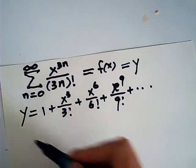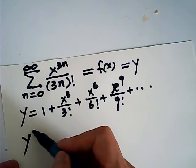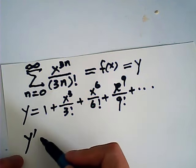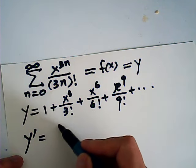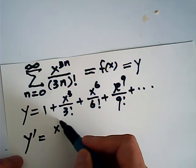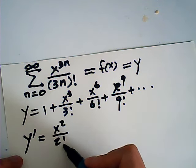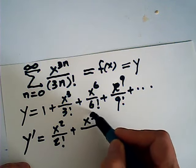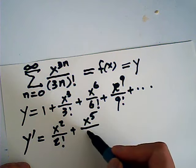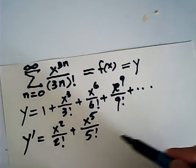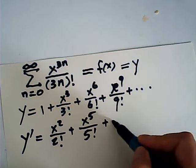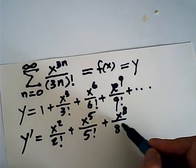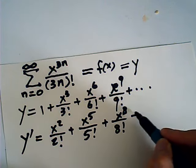Now if we take the derivative of y with respect to x, that will be equal to x squared over 2 factorial, plus x to the fifth over 5 factorial, plus x to the eighth over 8 factorial, and so on.